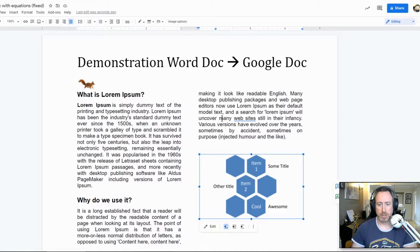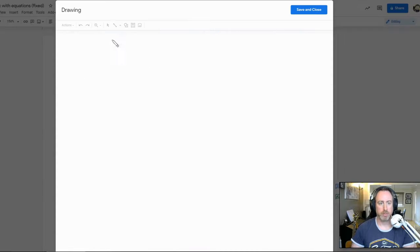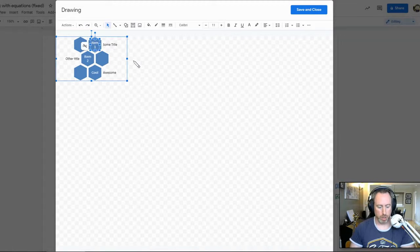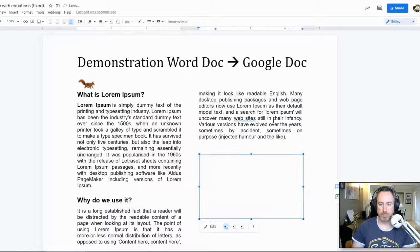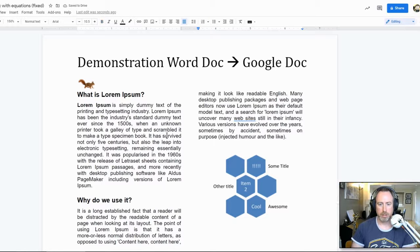So it took that smart diagram from Word and actually fully converted it to a Google Draw item. That is snazzy. Actually, here, let's modify it. Let's say instead of item one, let's just put a bunch of exclamation points. Save. Yep. That is an editable object. I like that.